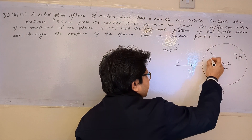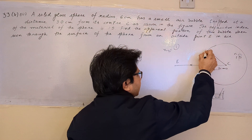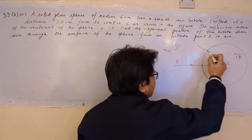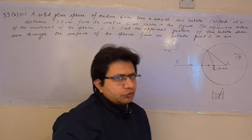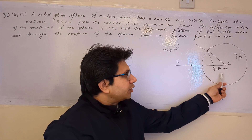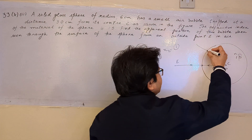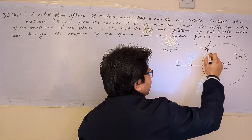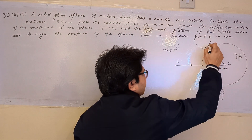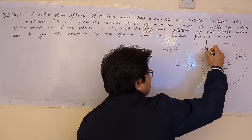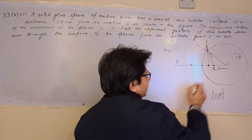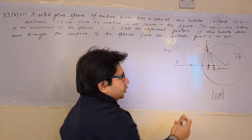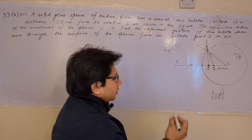But suppose a light ray goes at a particular angle — this is the normal to the surface passing through point C, the center of curvature. From basic rules of optics, when light moves from a denser medium to a rarer medium, it moves away from the normal. So if this is the angle of incidence, this is the angle of refraction. If we trace the path backward, we can see the final position of the image of this particular air bubble. There is an apparent shift and we have to find it.